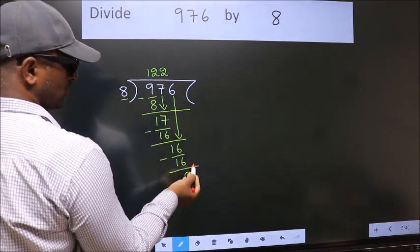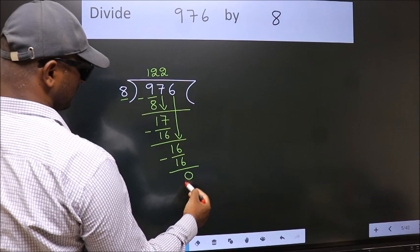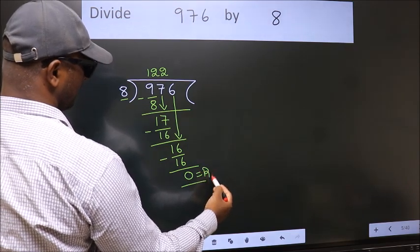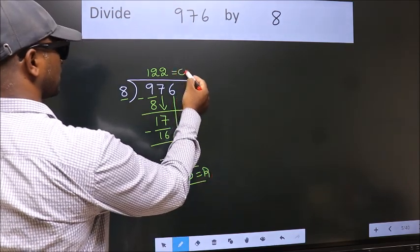No more numbers to bring it down. So, we stop here. This is our remainder. This is our quotient.